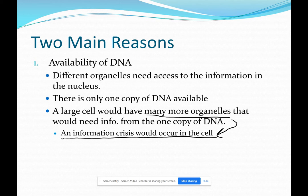So your book calls it an information crisis would occur, basically meaning that certain organelles would need access to the DNA and they wouldn't be able to get it. So from this slide, you really do need everything.